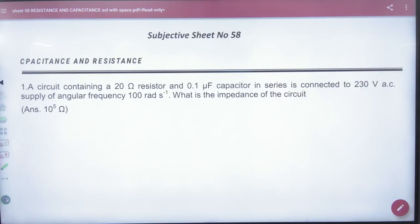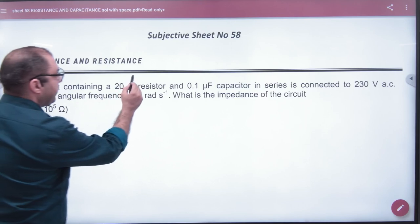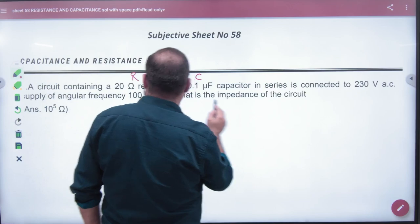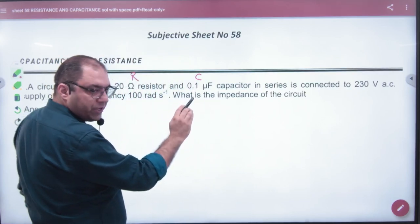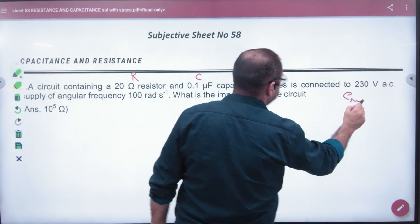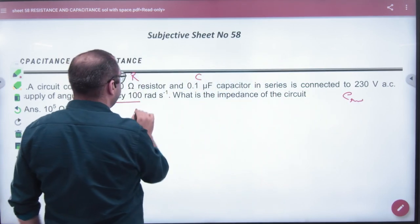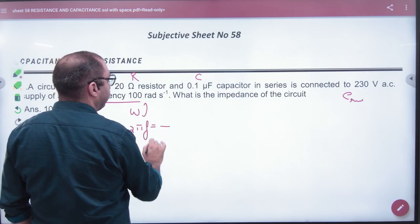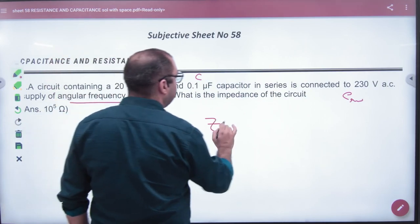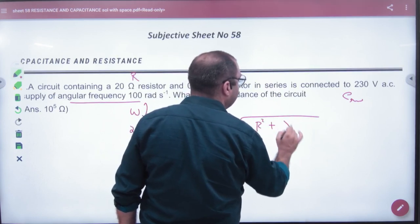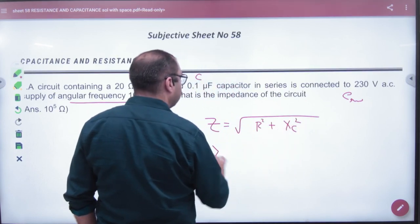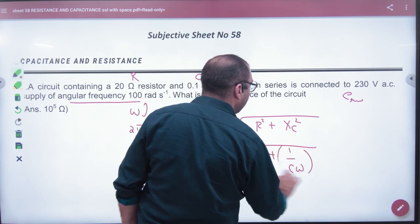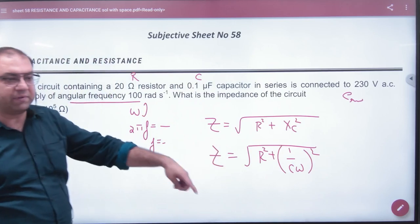Look, the question is: a circuit containing what is given? R C microfarad - convert to Farad - so this is R and C combination. What is given? E RMS, angular frequency omega. F will be given to find impedance. What will be impedance? Under root of R square plus X C square. So what will be under root of R square plus 1 by C omega square. R knows, C knows, omega knows, answer.